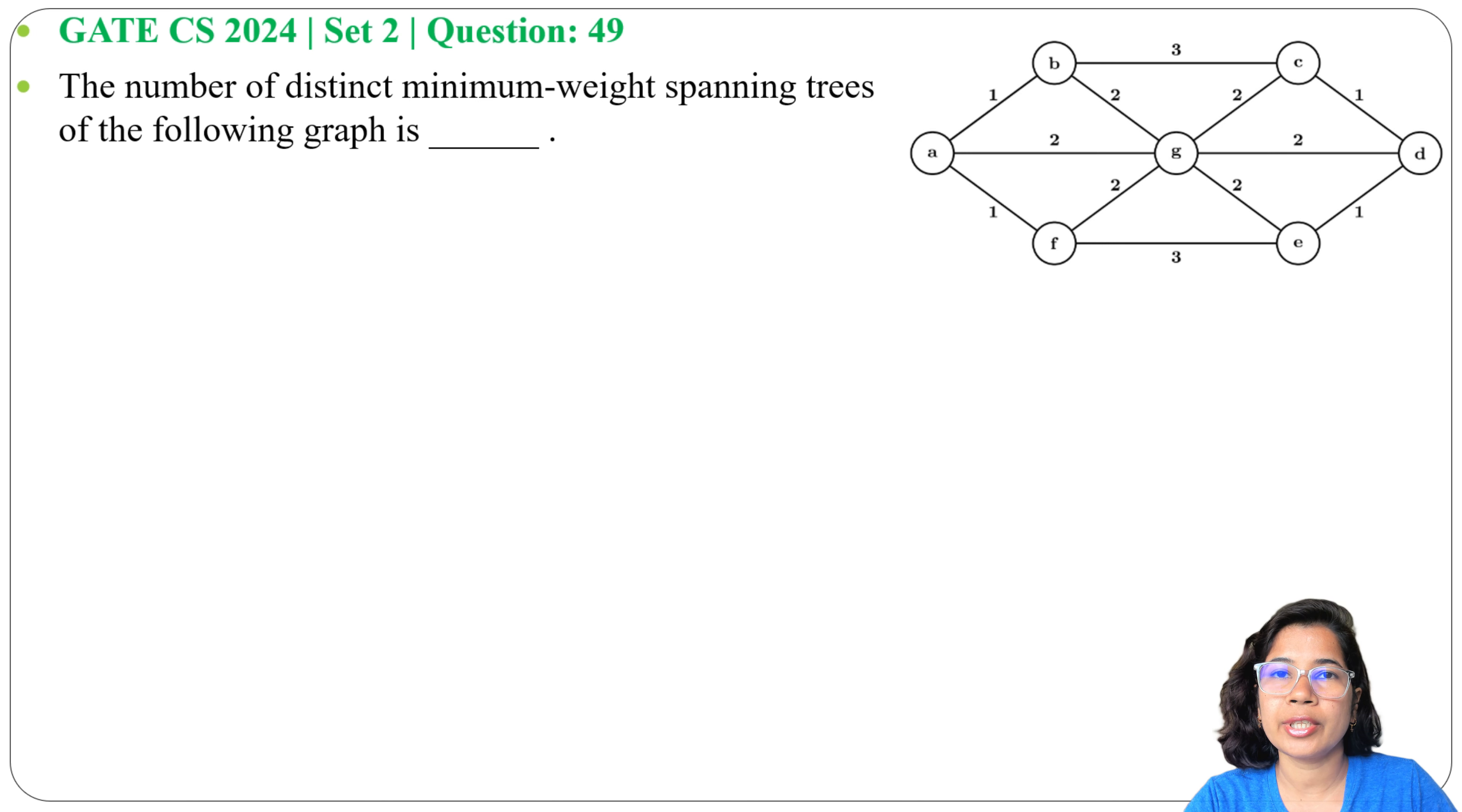One is Prim's algorithm, another is Kruskal's algorithm. Here I will apply Kruskal's algorithm. In Kruskal's algorithm we choose weights according to increasing order, there should not be any cycle, and it should be connected.